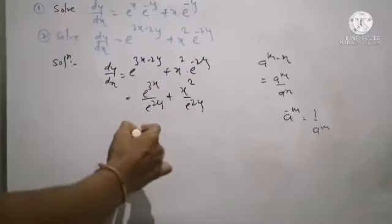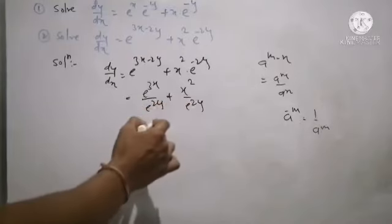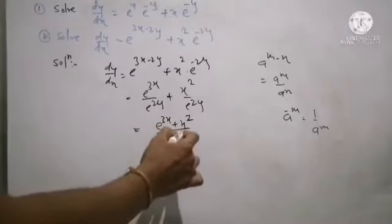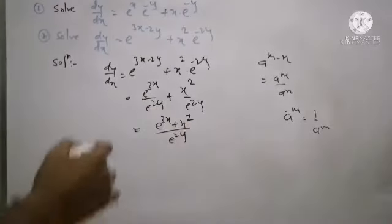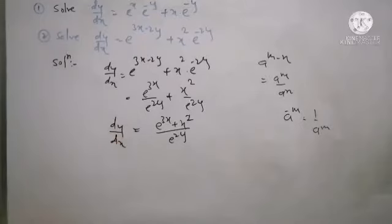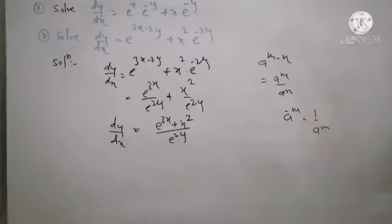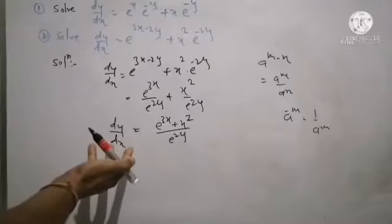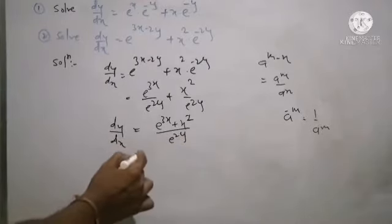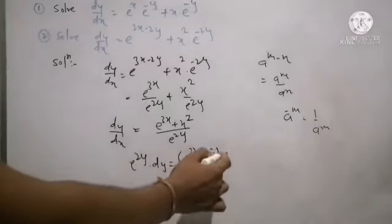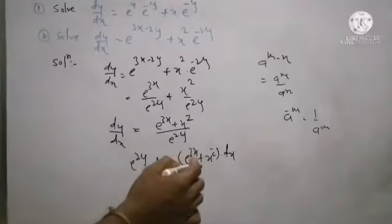We get e raised to 2y as a common denominator from both terms. Making the denominator common, the numerator becomes an addition. We can observe that the numerator is a total term of x and denominator is a term of y, so this is a variable separable differential equation. We separate the terms of y and dy, and terms of x and dx, on either side. The term of y, e raised to 2y, moves to the left hand side as it was in the denominator, coming into multiplication with dy, and on the right hand side we put a bracket on the addition, multiplied by dx.